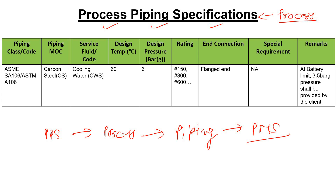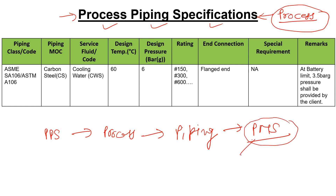So what information will you get from the process piping specification? Simply, in your plant there will be many lines, and in those lines there will be different types of service fluids. The process piping specification tells you which type of MOC you are going to use for each service fluid. This is provided by the process team, and after that the PMS — the piping material specification — is the more detailed document.